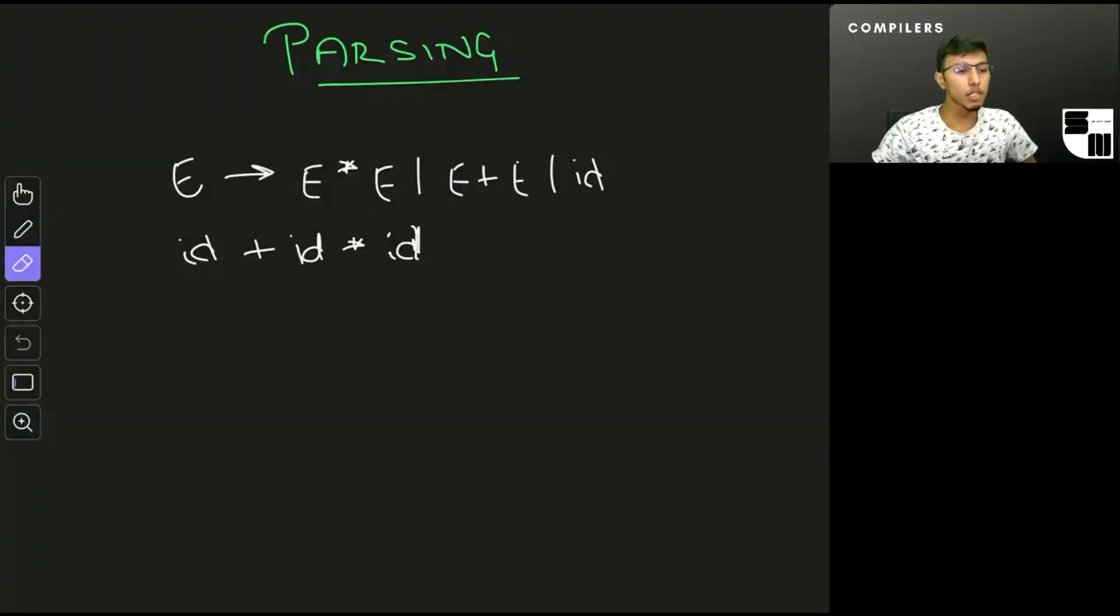Hi and welcome back. In the previous video we were talking about ambiguous grammar. We have a grammar written on the screen and a string which can have multiple parse trees according to the grammar, which means the grammar is ambiguous. In this video we'll talk about the different disambiguation techniques that can be used.